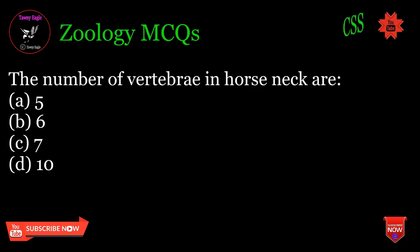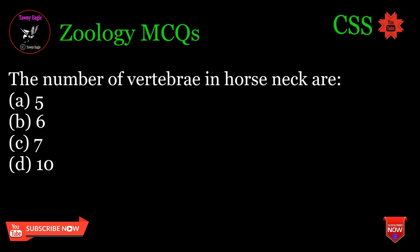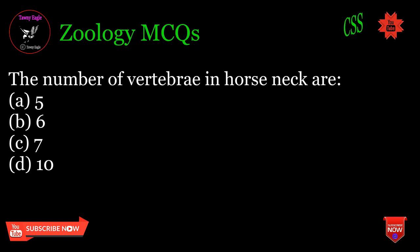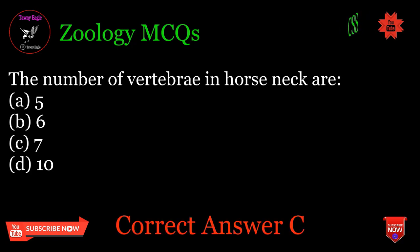The number of vertebrae in a horse's neck are: A. 5, B. 6, C. 7, D. 10. Correct answer: C.